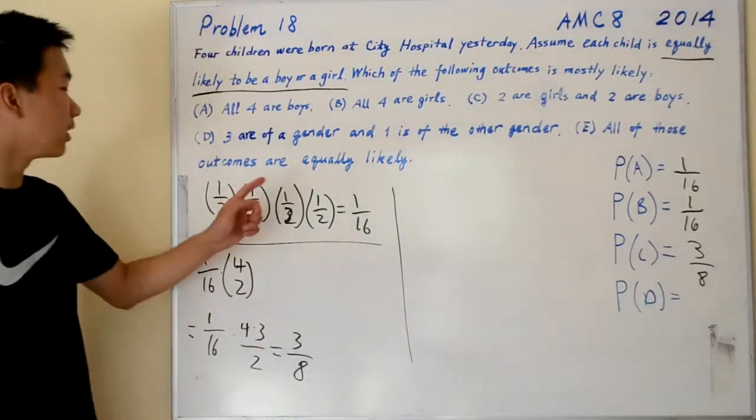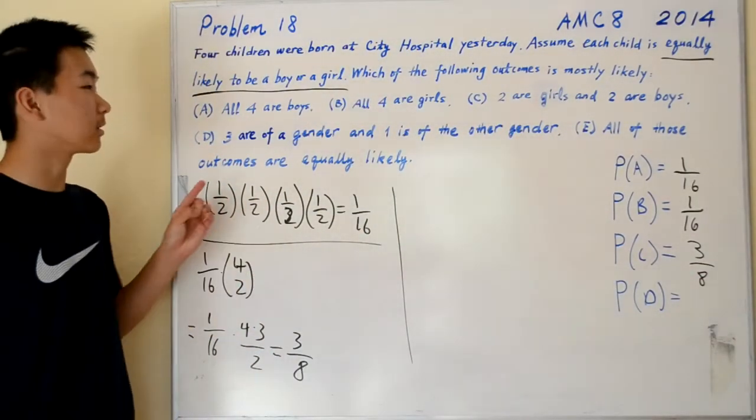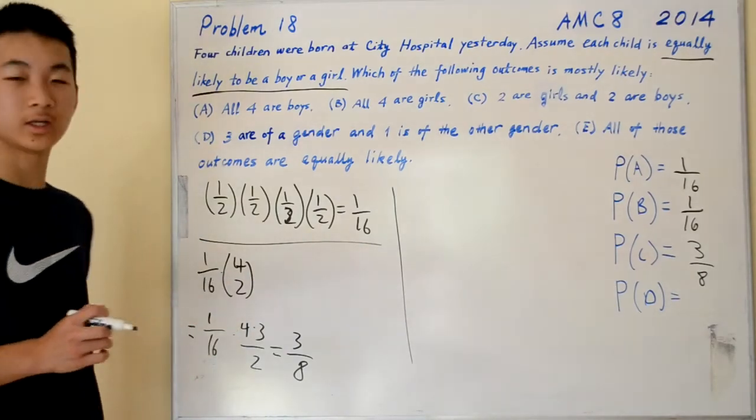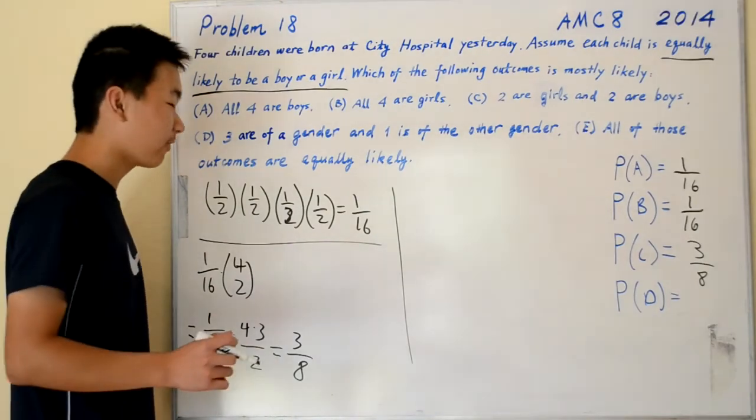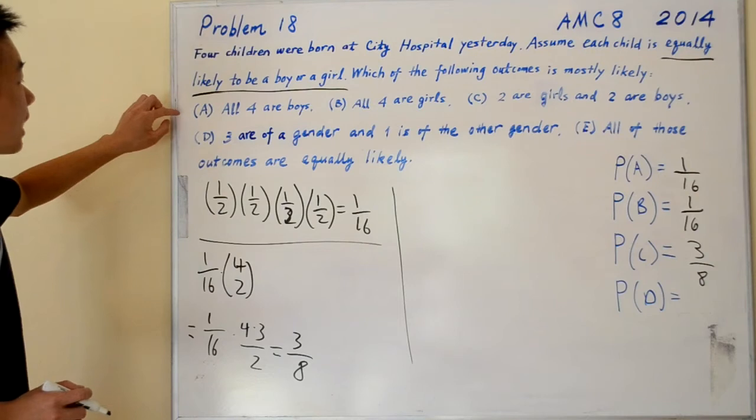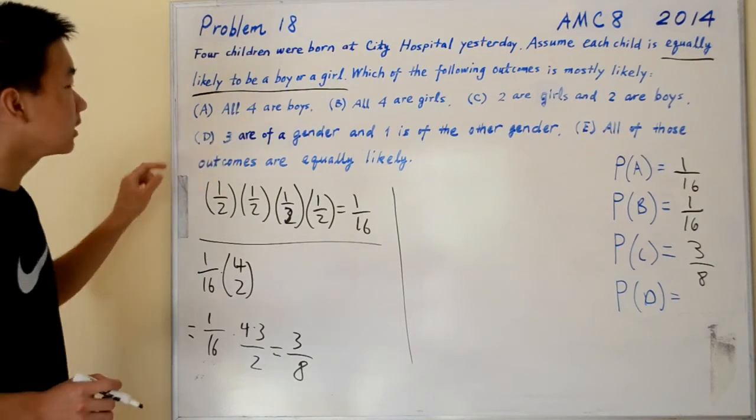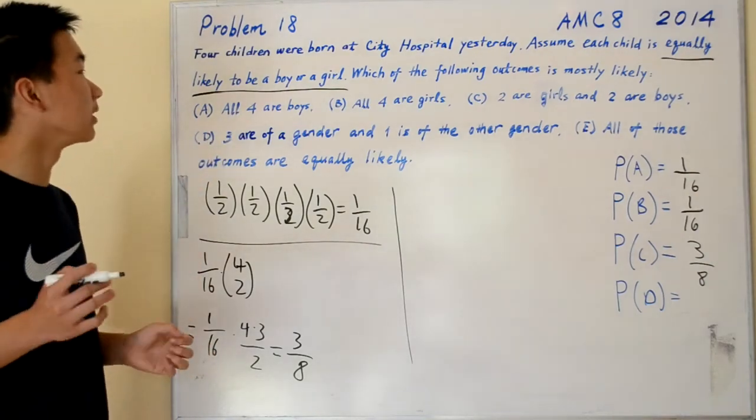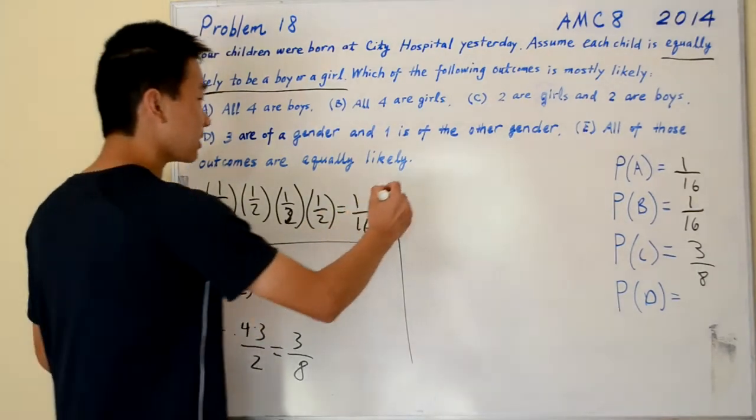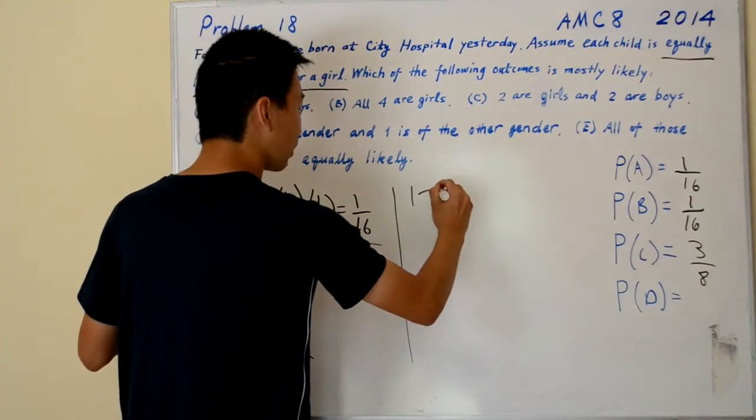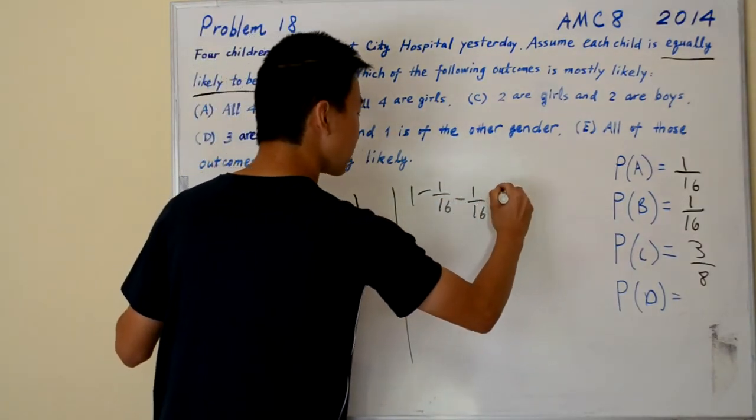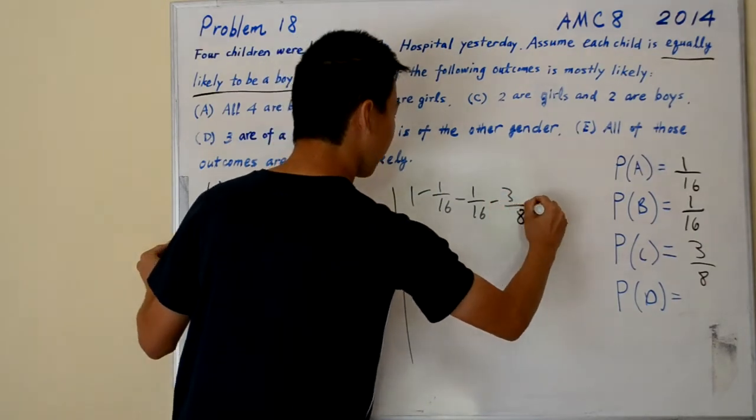So at this point, we know for sure E is not the answer. Now to calculate the probability of D, we can take two approaches. The faster way is to realize that choices A, B, C, and D encompass all possibilities of all combinations of boys and girls. So the answer is simply one minus one over sixteen minus one over sixteen minus three over eight. And that equals one half.